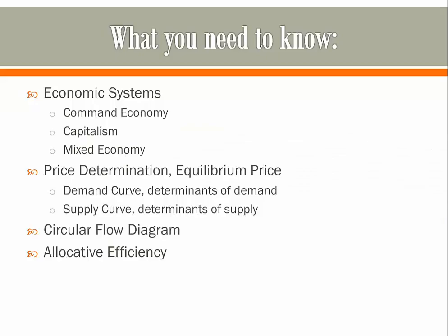Here's what you need to know for this chapter. You need to know the three main types of economic systems: a command economy, capitalism, and what a mixed economy is. You also need to know what price determination is, what an equilibrium price is, what demand and supply curves look like, and some determinants of both. You also need to know what a circular flow diagram is and what allocative efficiency is.